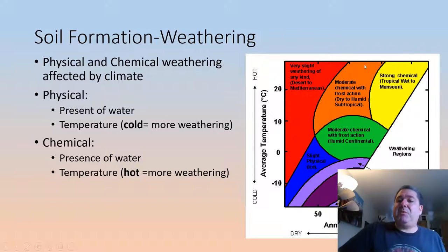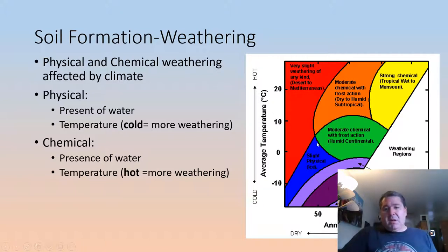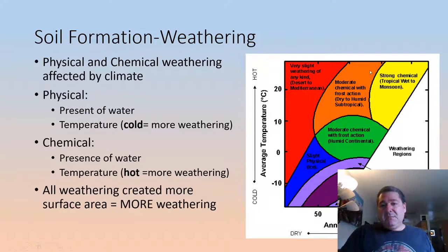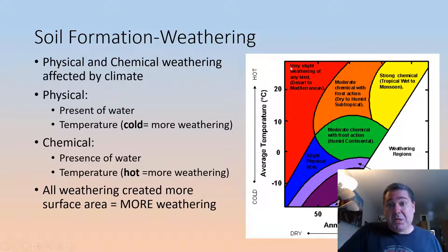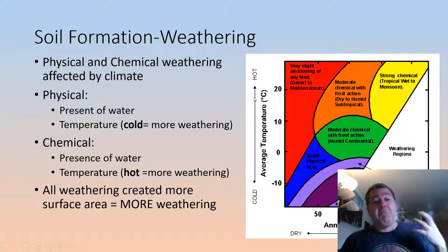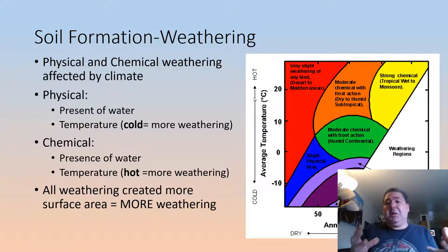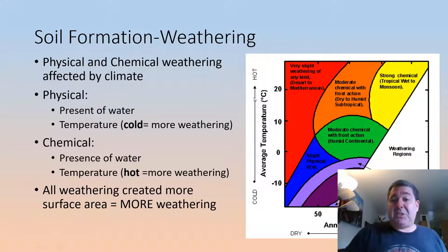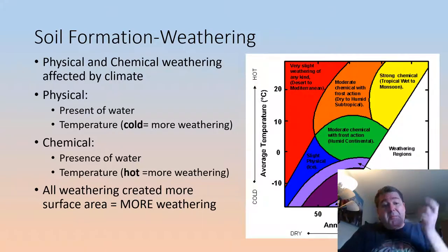Strong chemical weathering happens when we have lots of rain and heat. Strong physical weathering occurs with some moisture but colder temperatures providing that freeze-thaw cycle. Very little weathering of any kind happens where there's no water, such as in an Antarctic desert or arctic tundra. Importantly, all weathering creates more surface area — breaking a rock apart or dissolving minerals into clay and ions increases surface area, providing more sites for further weathering. So the process of weathering speeds up the process of weathering.